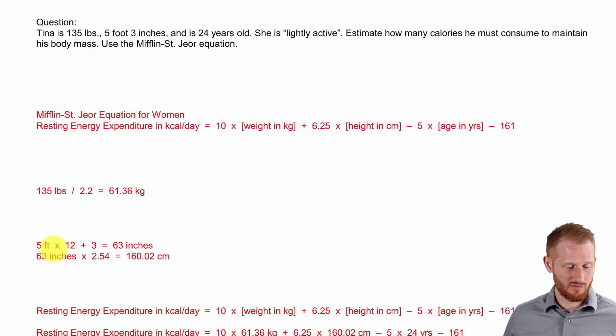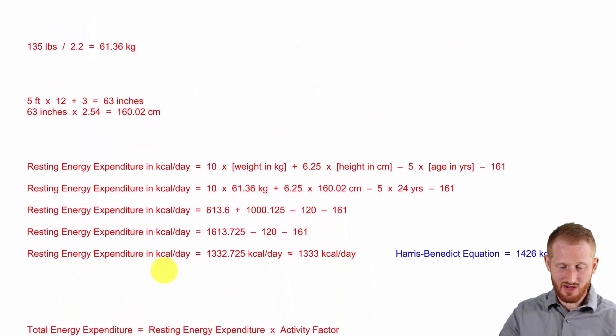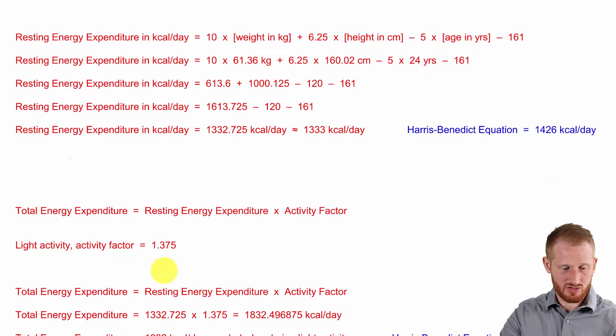She was 5 foot 3 inches tall. So 5 feet times 12 inches per foot plus the 3 inches gives us 63 inches. 63 inches times 2.54 gives us 160.02 centimeters.